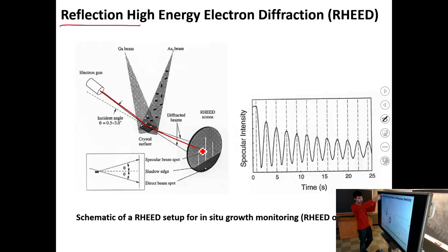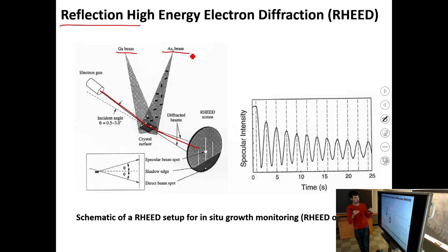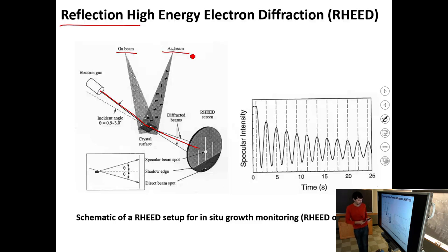This RHEED monitoring all happens while you are growing. With gallium and arsenic beams coming in, you monitor the diffraction, and the intensity of the diffraction pattern actually oscillates. By counting these oscillations you can count how many single atomic layers you have grown. You can grow some gallium arsenide, then switch to germanium, and you will have a perfect atomically sharp transition from gallium arsenide to germanium.